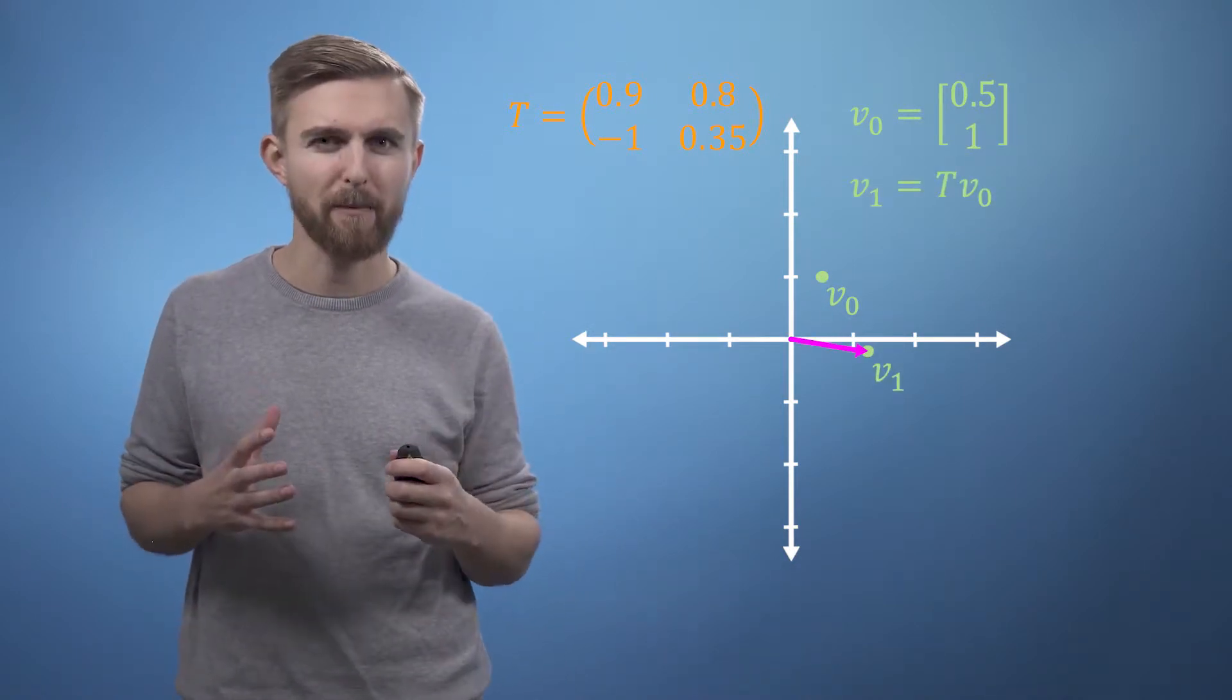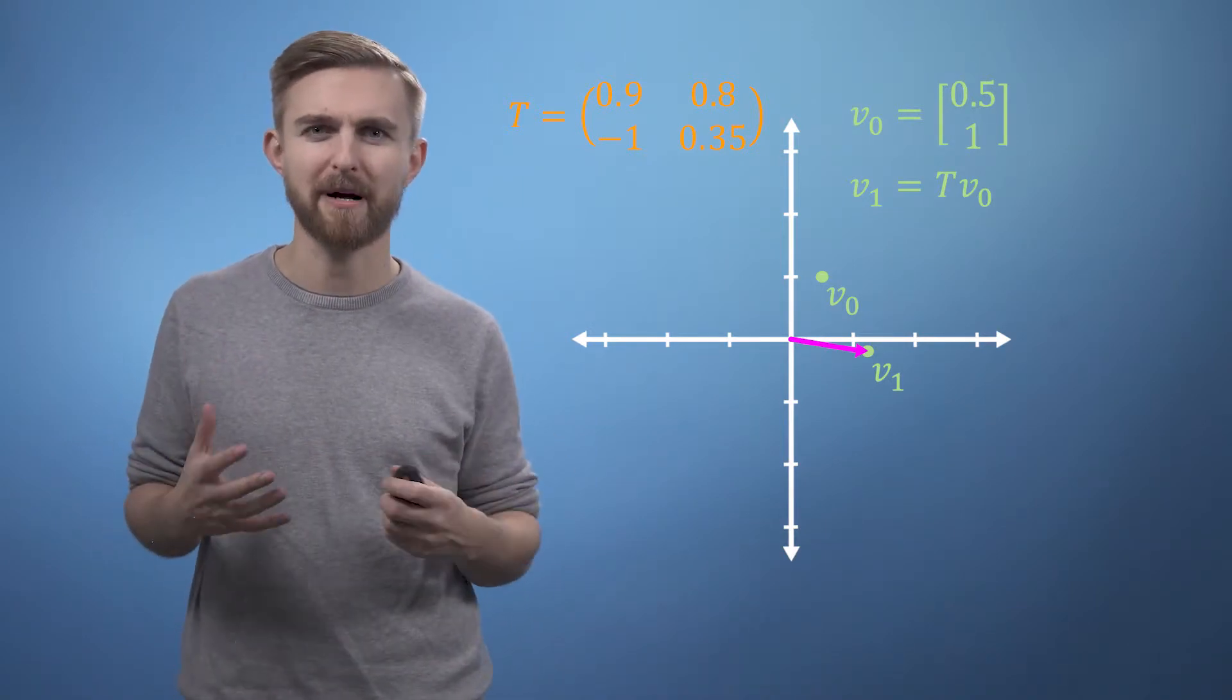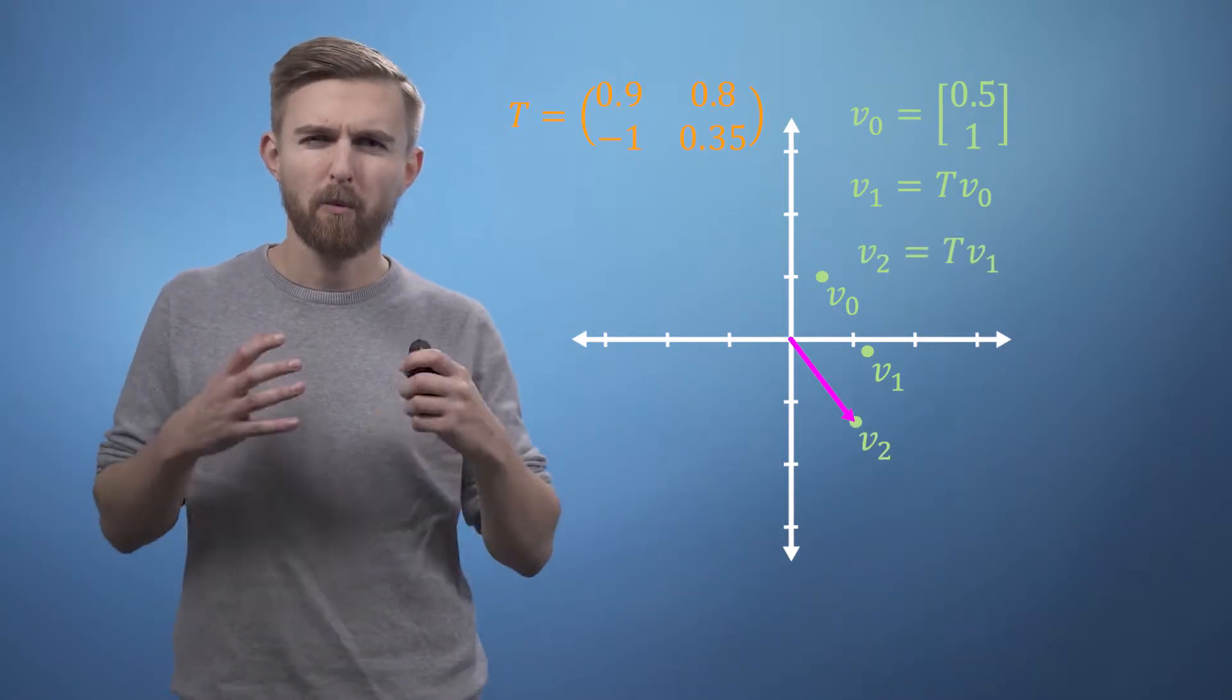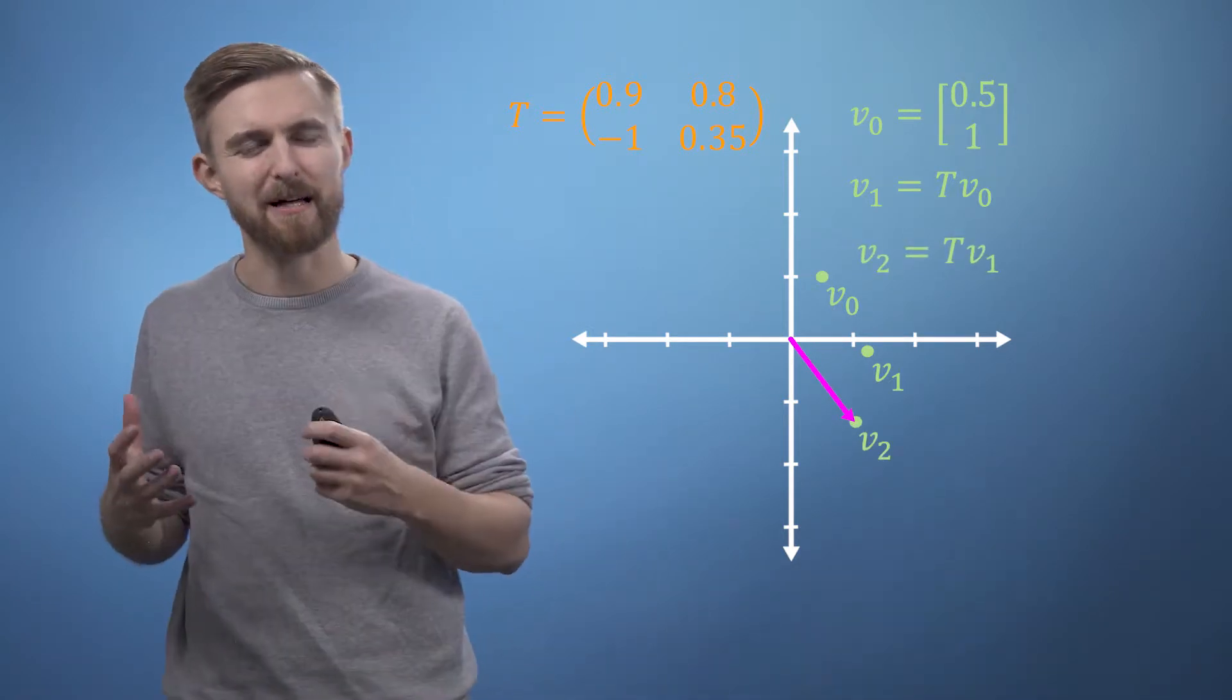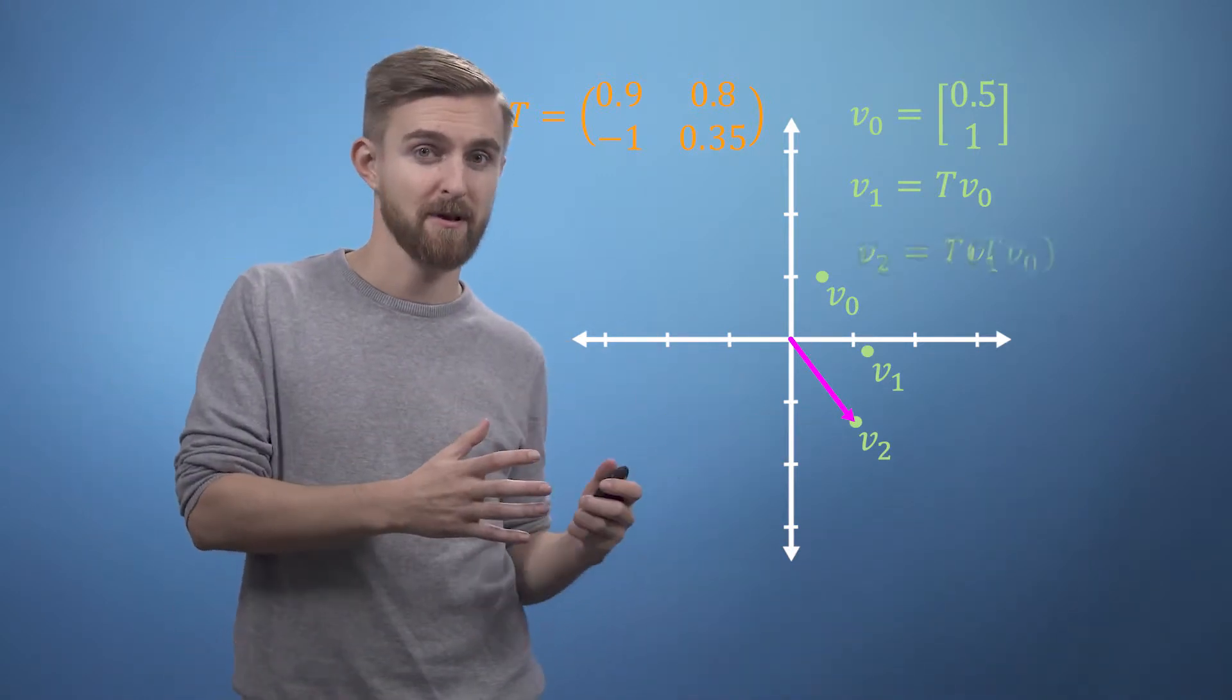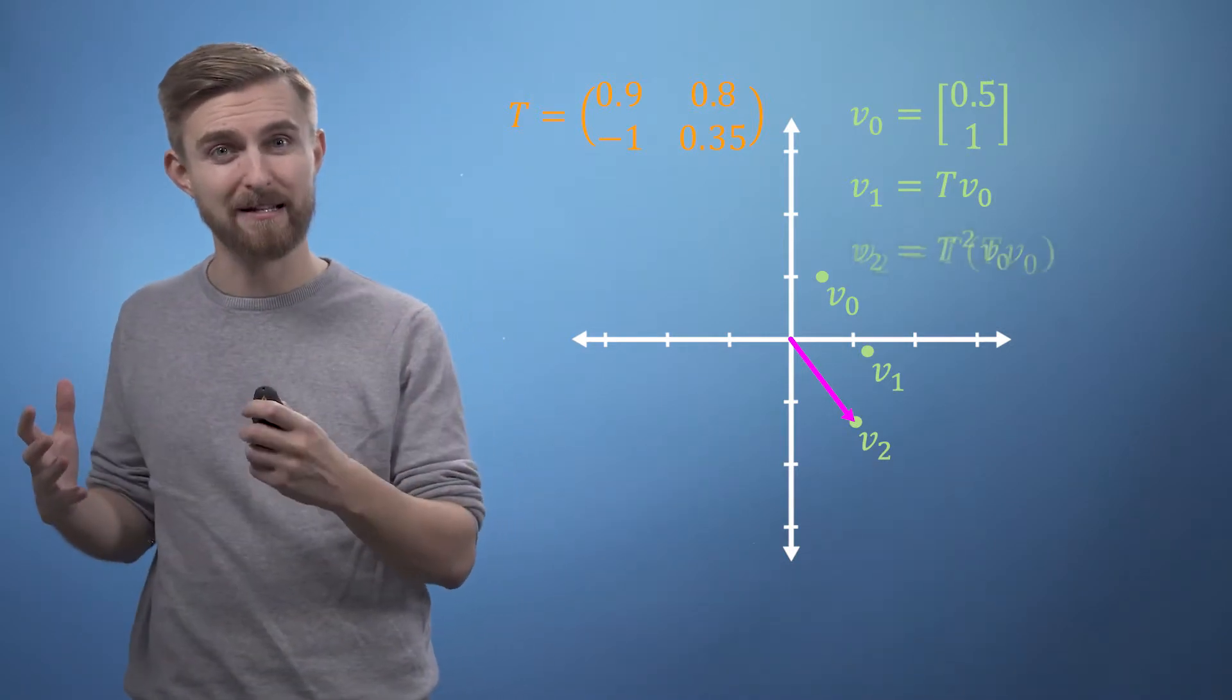To work out where our particle will be after two time steps, we can find v2 by simply multiplying v1 by T, which is of course the same thing as multiplying v0 by T two times. So v2 equals T squared times v0.